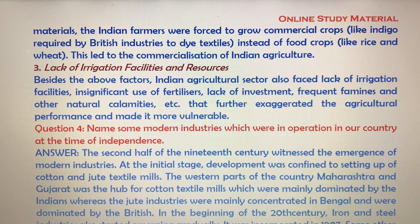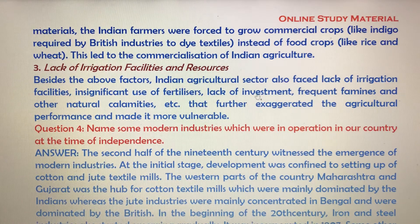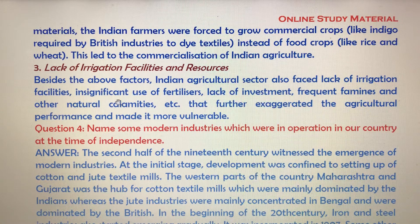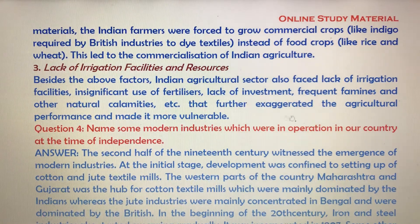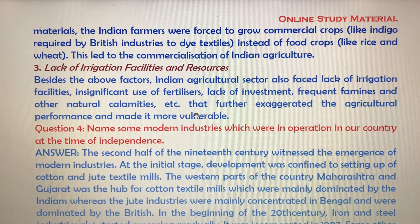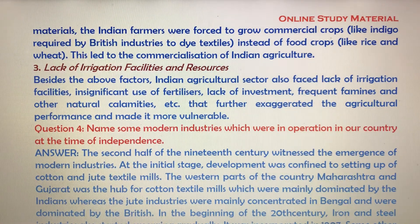The next important cause is lack of irrigation facilities and resources. Besides the above factors, the Indian agriculture sector also faced lack of irrigation facilities, insignificant use of fertilizers, lack of investment, and frequent famines and natural calamities. These factors further exaggerated poor agriculture performance and made it more vulnerable.